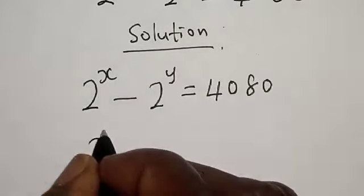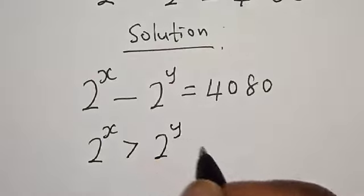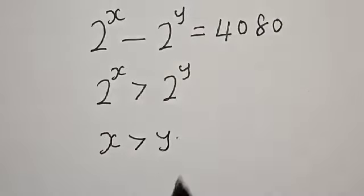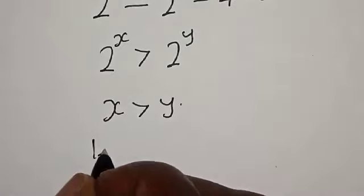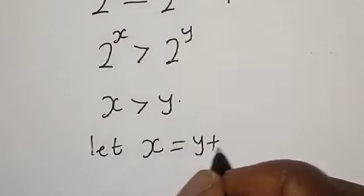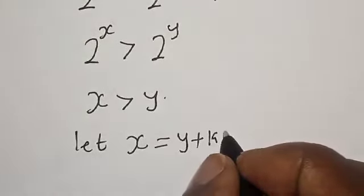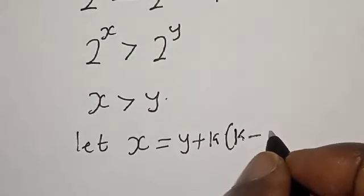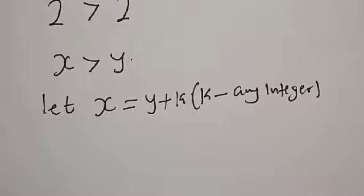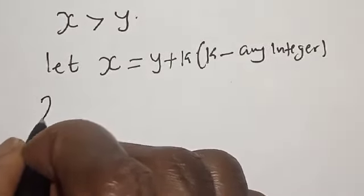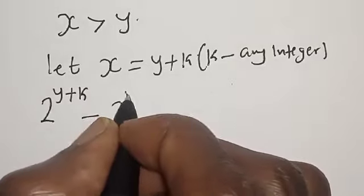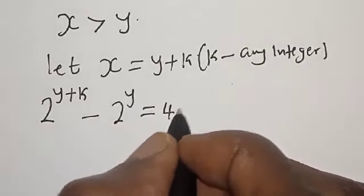Note that 2 raised to power x is greater than 2 raised to power y, which means x is greater than y. In this case, we let x equal to y plus k, for k being any integer. So anywhere you see x, you put y plus k. Then we have 2 raised to power (y plus k) minus 2 raised to power y is equal to 4080.